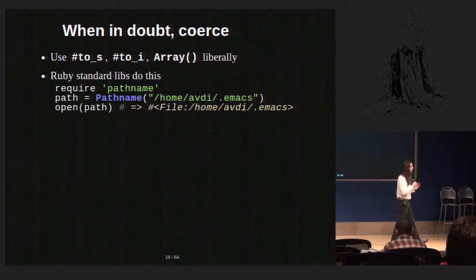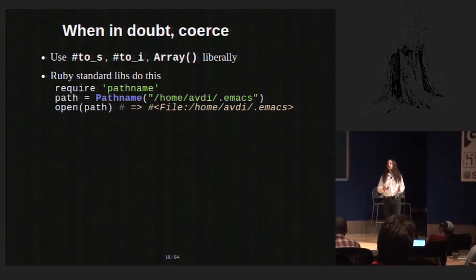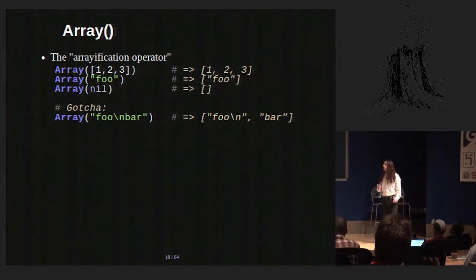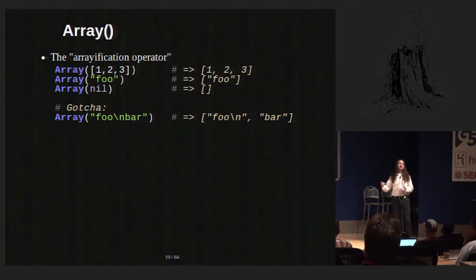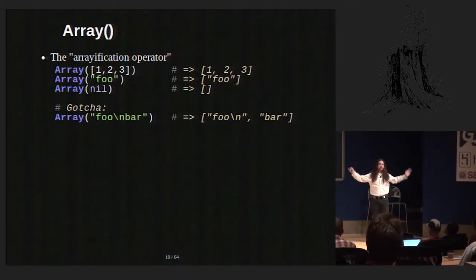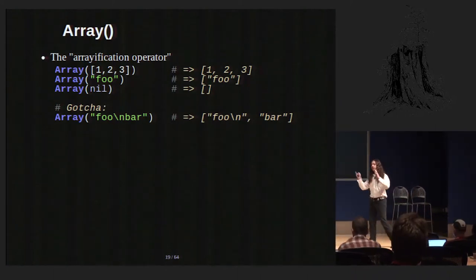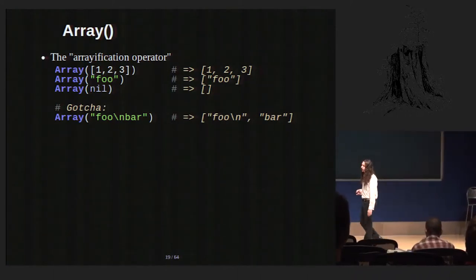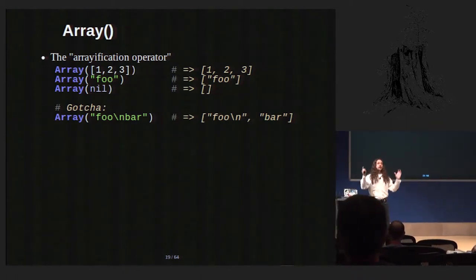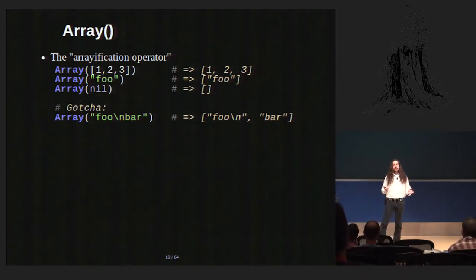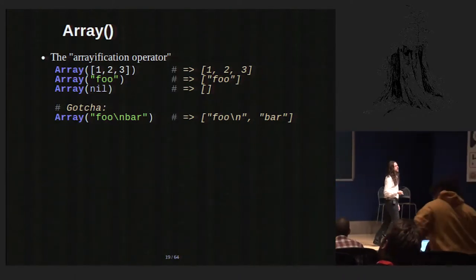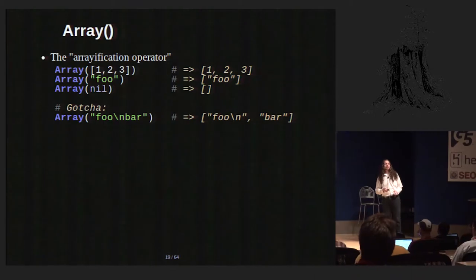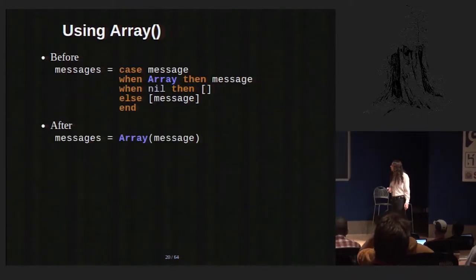Array() is really cool. You can give it pretty much anything and it'll give you a sensible array in return. If you give it an array, it gives you that same array back. If you give it a singular object, it wraps that in an array. If you give it nil, it gives you an empty array, which is generally what you want. So here's an example using Array() in cowsay. The original code has a case statement checking the type of the message argument — a big interruption in the flow. Apply Array() to it and it becomes a one-liner.